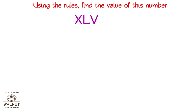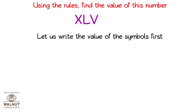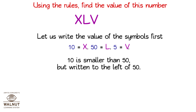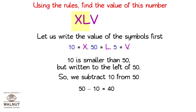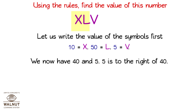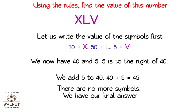Using the rules, find the value of this number: X, L and V. Let us write the value of the symbols first. X is 10, L is 50, V is 5. 10 is smaller than 50 but written to the left of 50, so we subtract 10 from 50: 50 minus 10 equals 40. We now have 40 and 5. Since 5 is to the right of 40, we add: 40 plus 5 is 45. X, L, V is equal to 45.